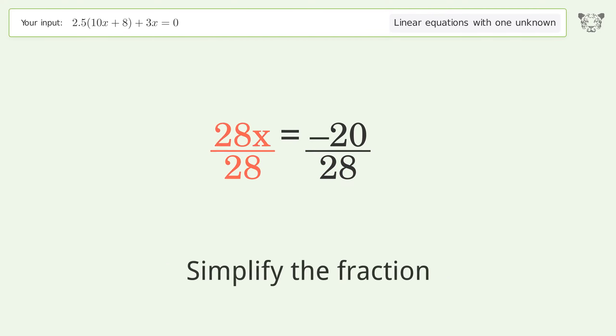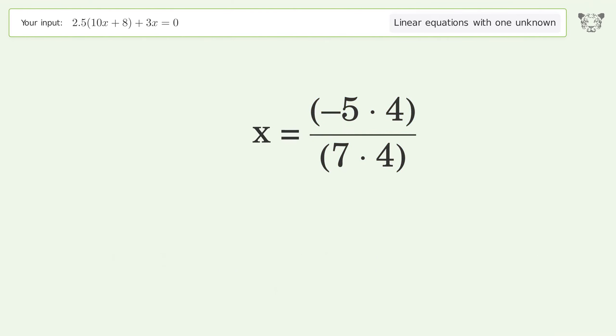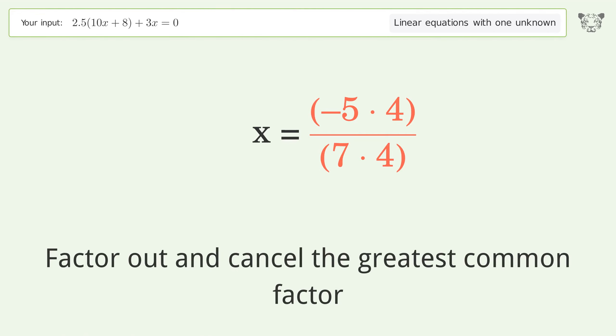Simplify the fraction. Find the greatest common factor of the numerator and denominator. Factor out and cancel the greatest common factor.